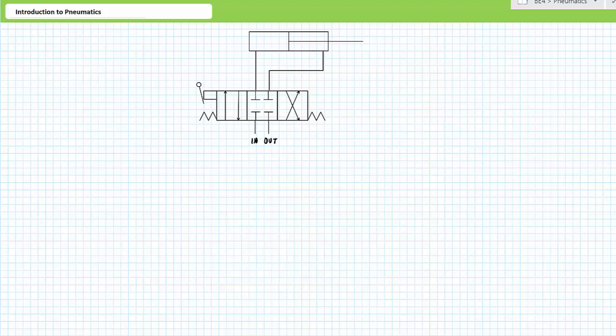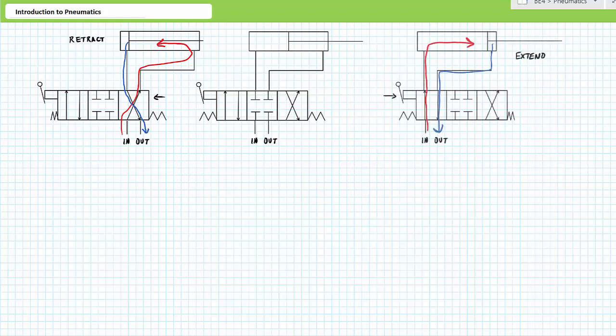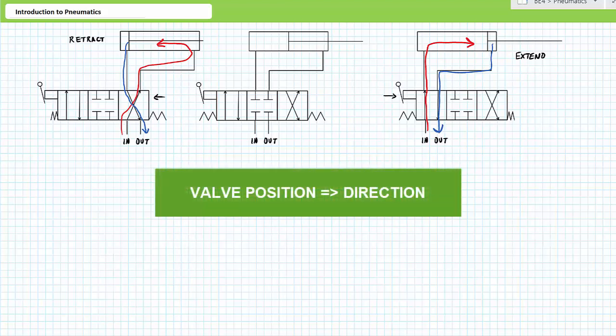First, a directional control valve is used to stop, start, and change direction of fluid flow in a fluid power system. When this valve is placed in the cross-connect position, pressurized flow is routed to the rod end, and the cap end is exhausted at low pressure. The double-acting cylinder retracts. Conversely, when placed in the straight-through position, pressurized fluid is routed to the cap end, and the rod end is exhausted at low pressure. The double-acting cylinder extends. In summary, valve position determines actuator direction. This is true for both hydraulic and pneumatic systems.